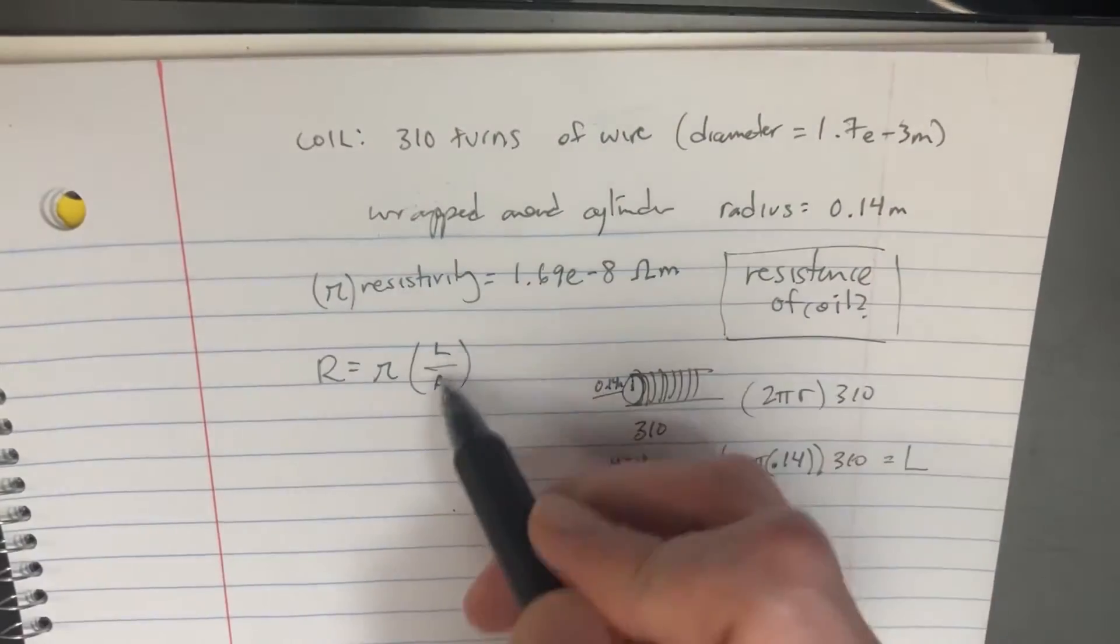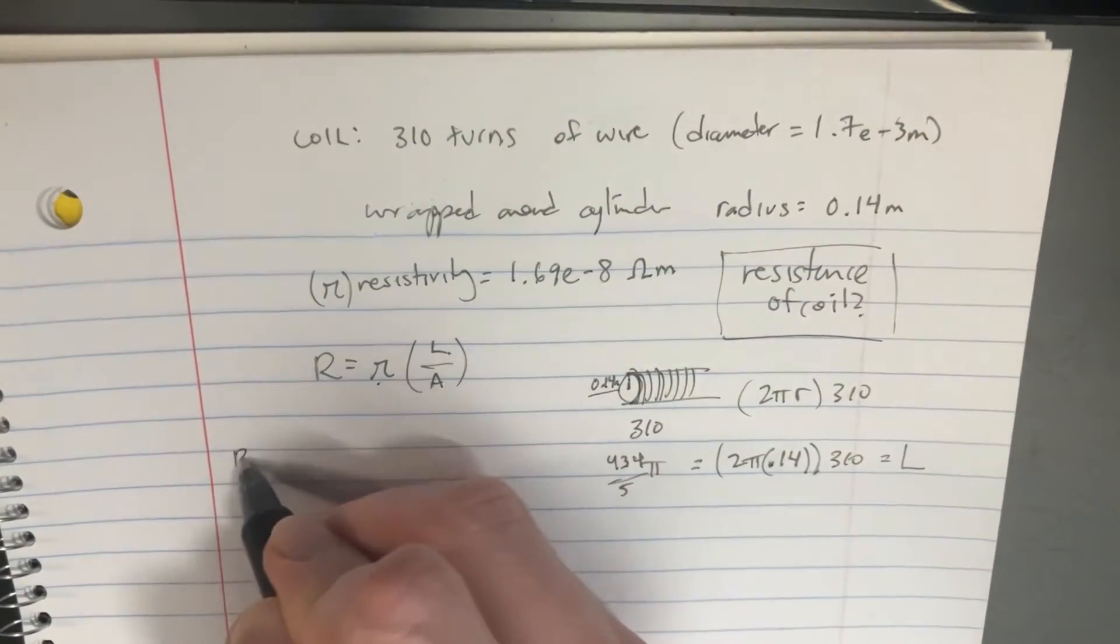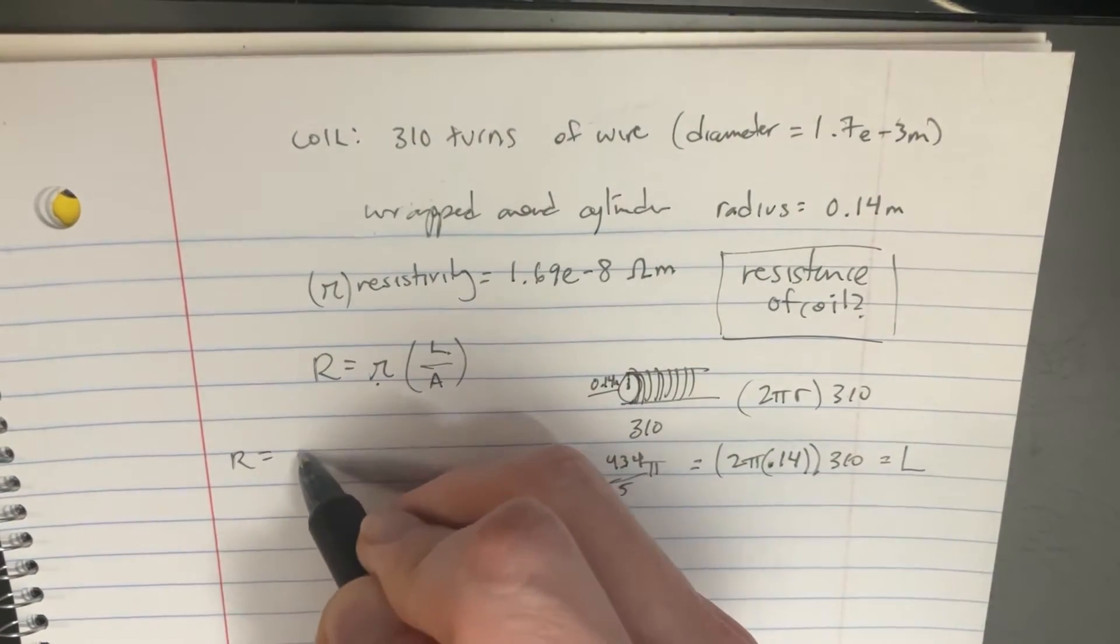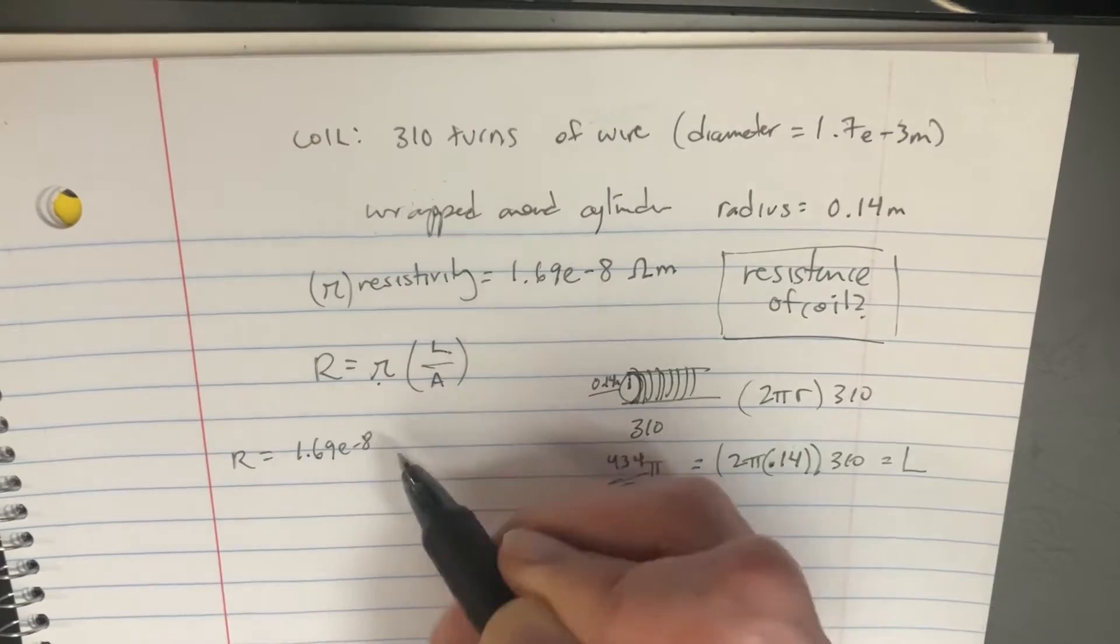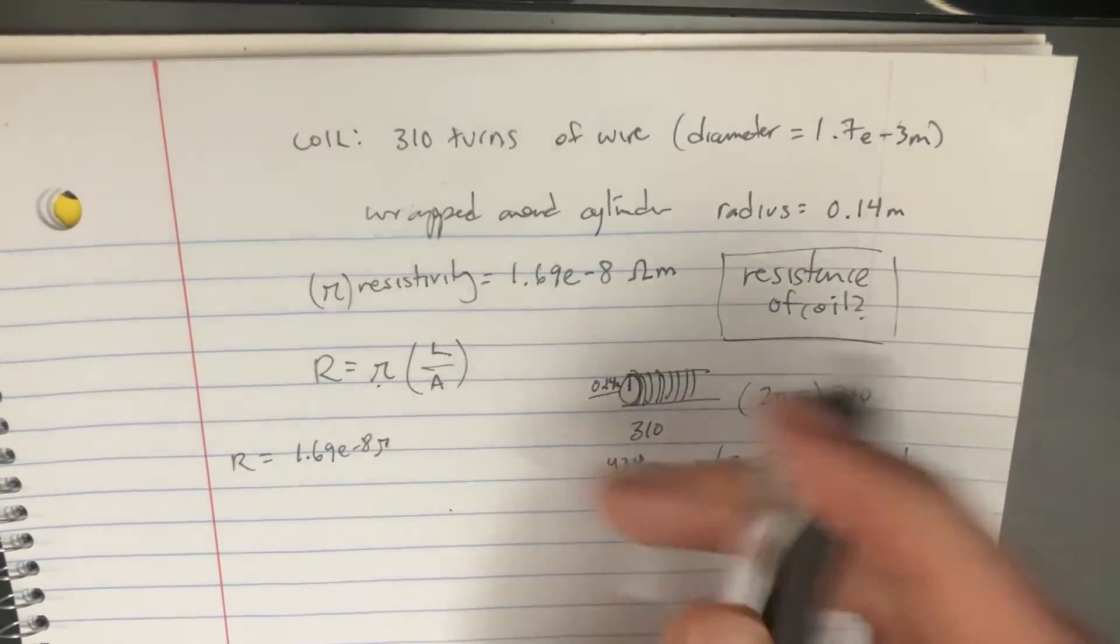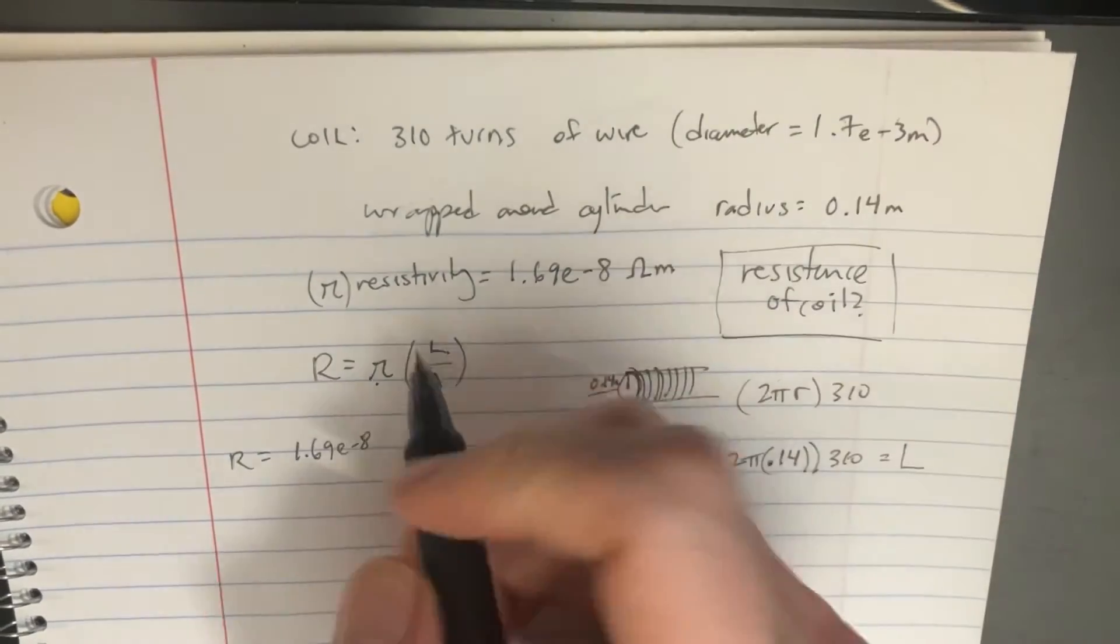And then we've got this top part. We also have this part already, so we're close. The resistivity is 1.69e-8 ohm meters.